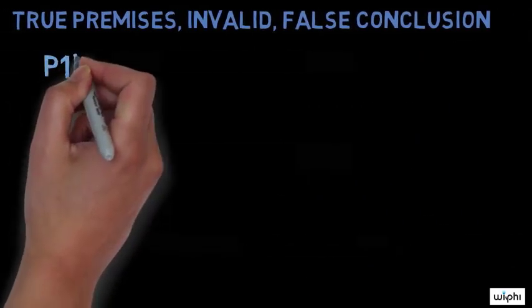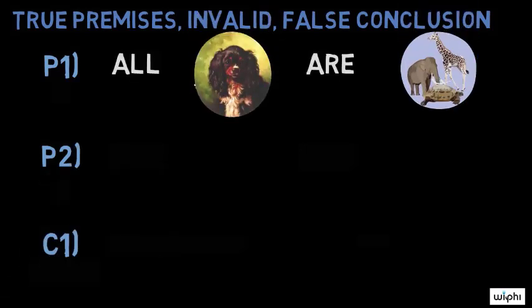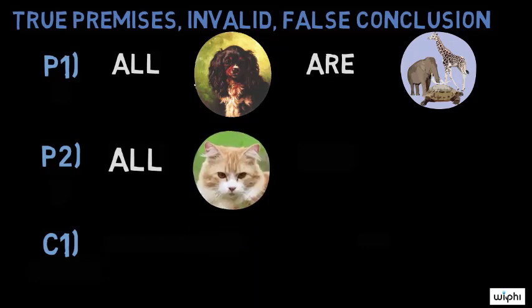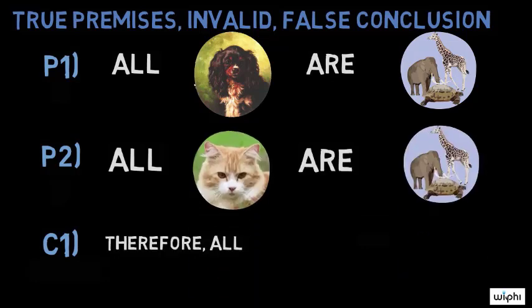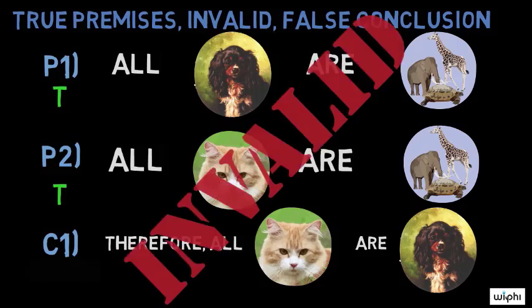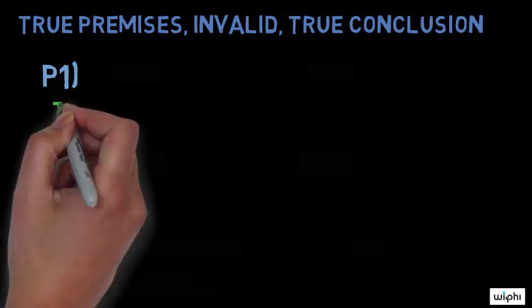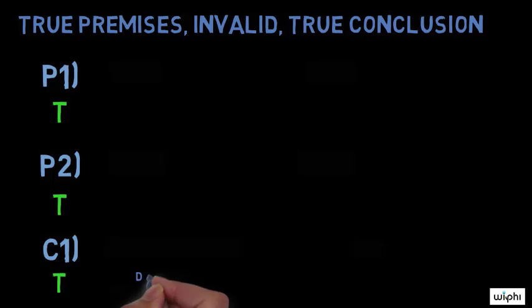Next is an example of an argument that has true premises but is not valid. Premise one: all dogs are animals. Premise two: all cats are animals. Therefore, all cats are dogs. Here, the premises are obviously true, but the conclusion does not follow logically from them. Of course, this argument is clearly unacceptable because its conclusion is obviously false. However, sometimes arguments can have true premises as well as true conclusions, but still be invalid because the conclusions do not follow logically from them.